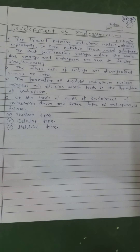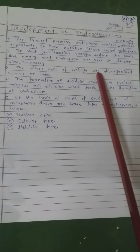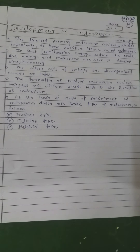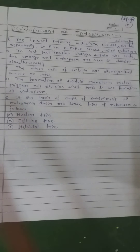Embryo development and endosperm development occur simultaneously in post-fertilization changes. The other cells of the embryo sac disorganize sooner or later — these parenchymatous cells disorganize and embryo and endosperm development begins. The formation of the triploid endosperm nucleus triggers cell division, which leads to the formation of endosperm.